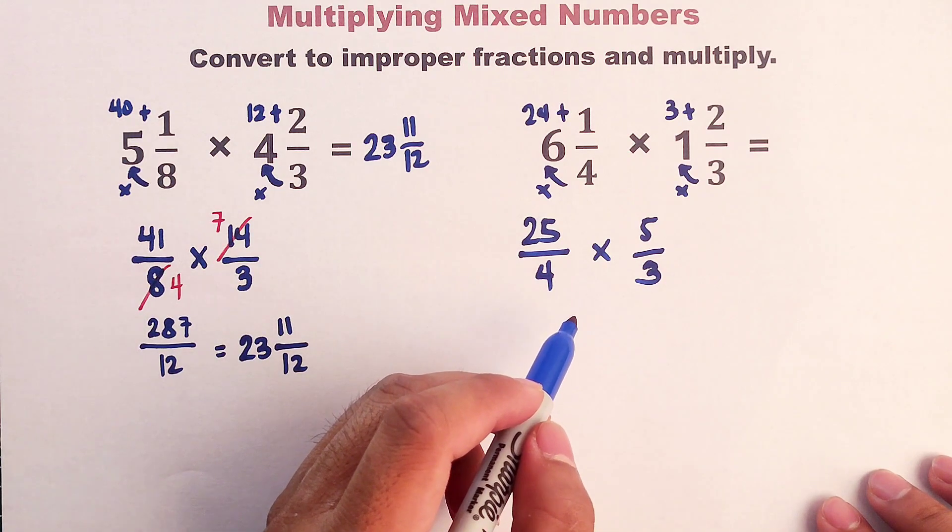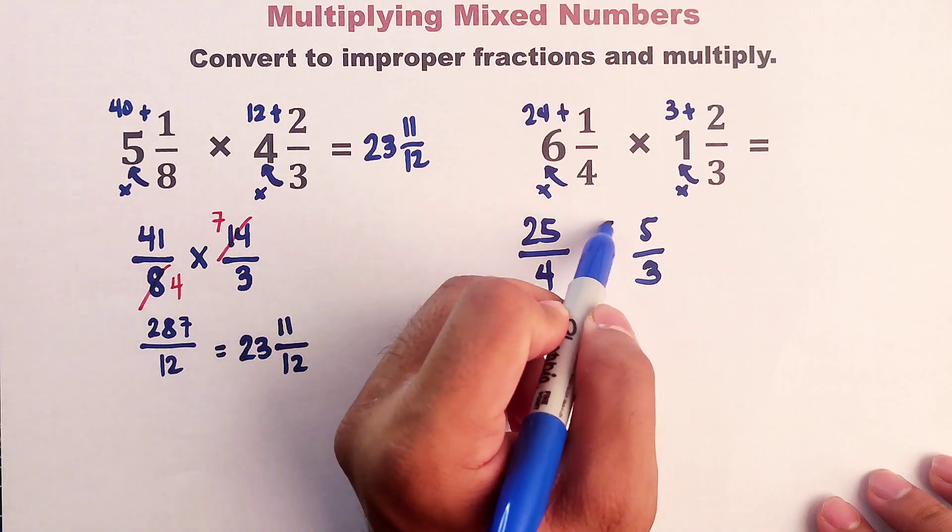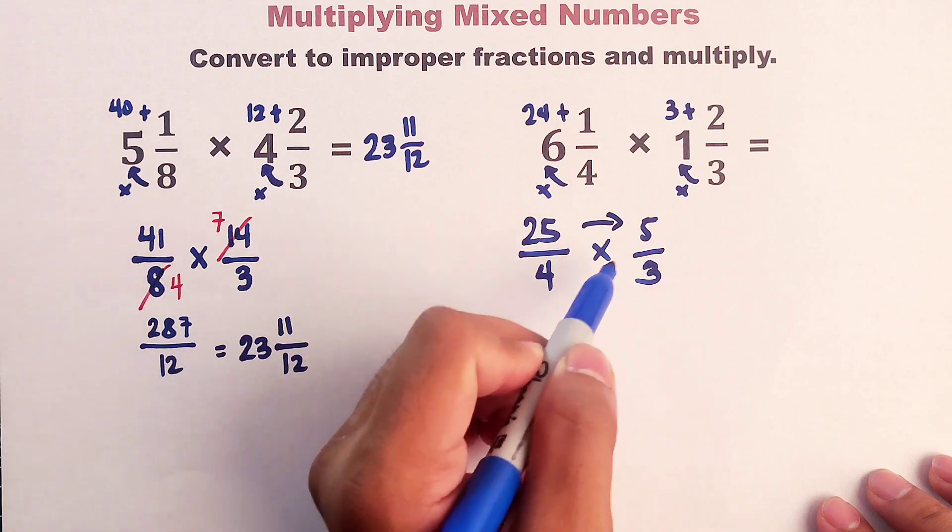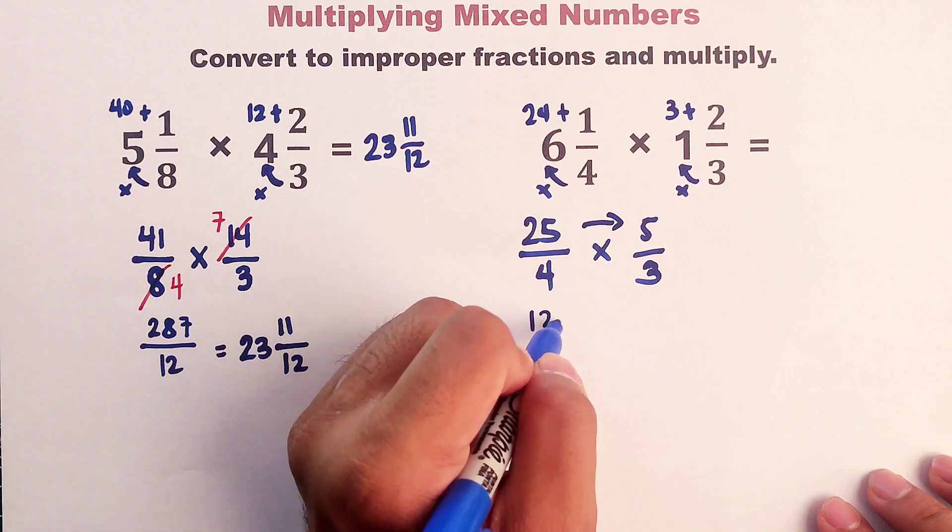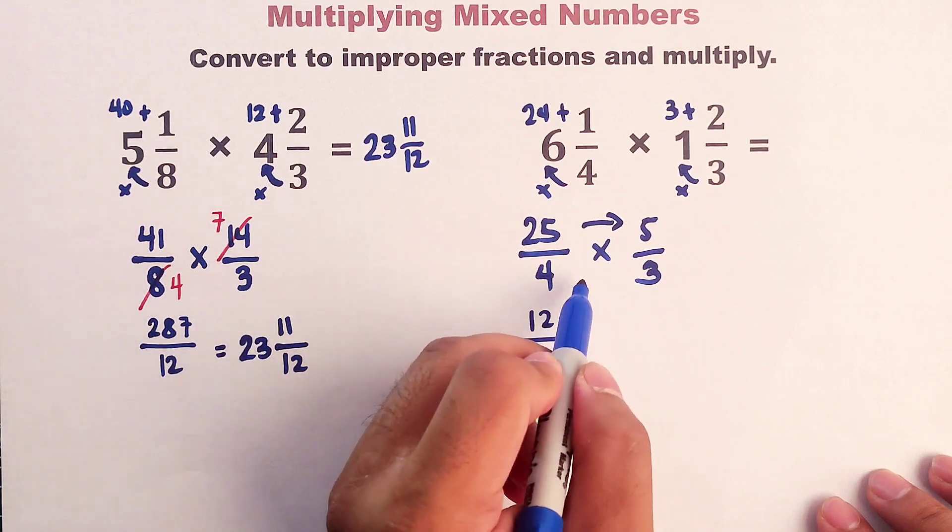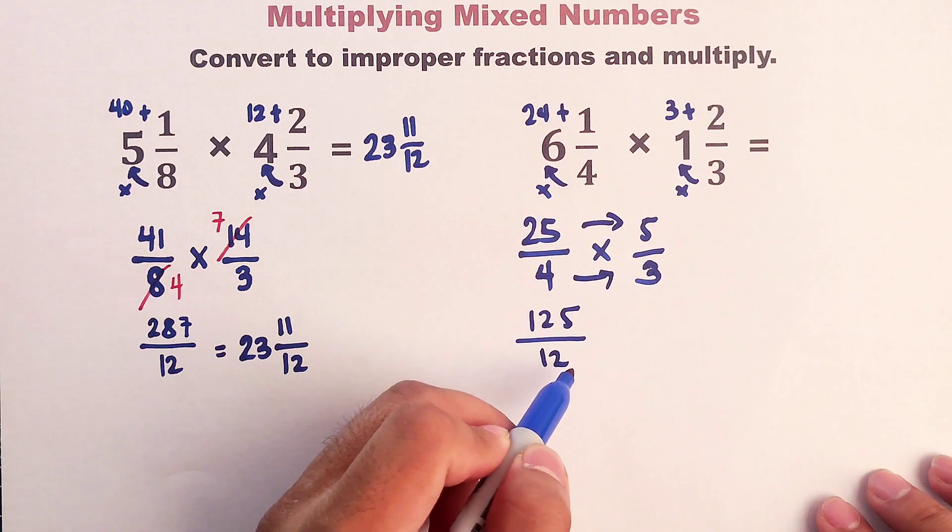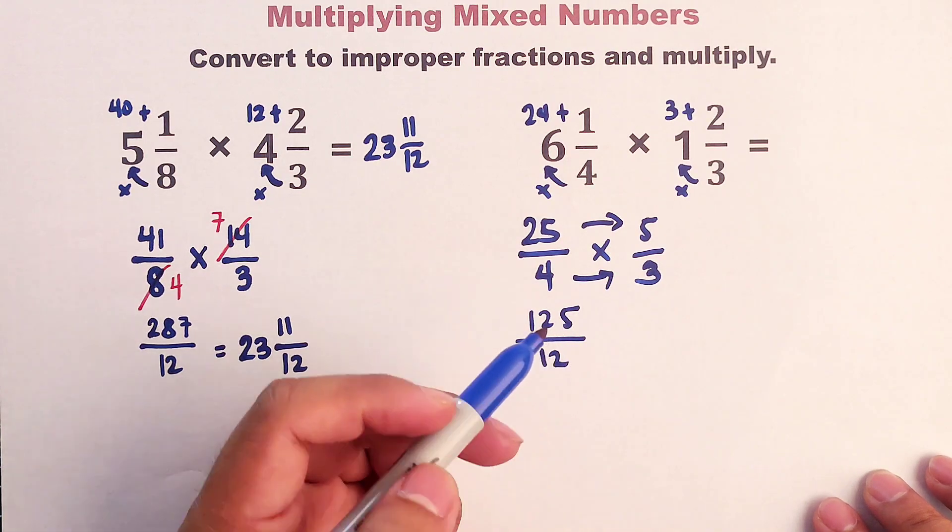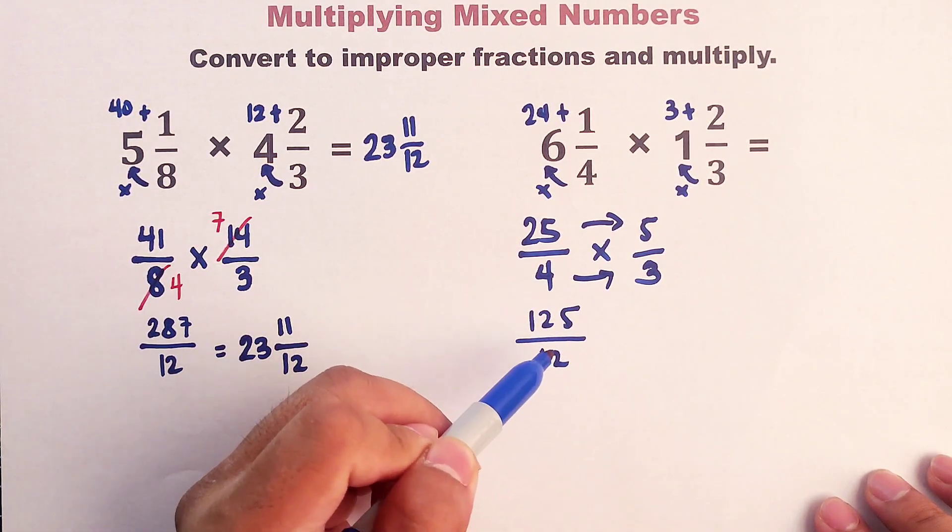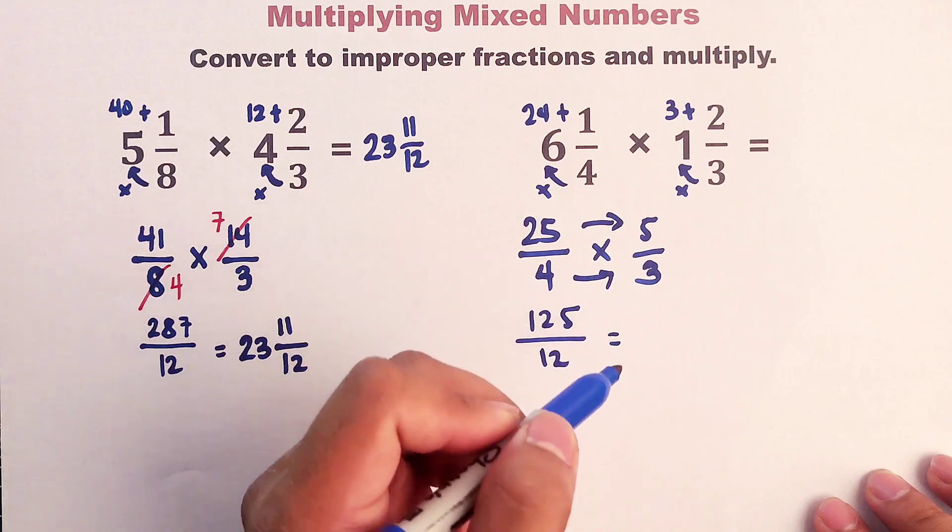So we can directly multiply the numerator. 25 times 5, that is equal to 125 over 4 times 3, which is equal to 12. Now, you will use long division. And to cut the story short, or the solution short.